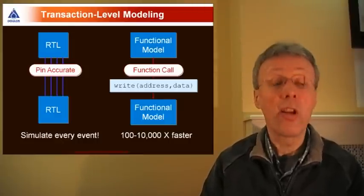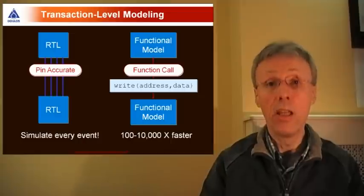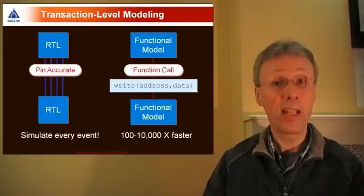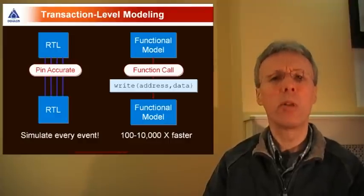So in order for two register transfer level blocks to communicate, you need typically to have an event on each individual signal connecting those two blocks together. And lots of events adds up to slow simulation.